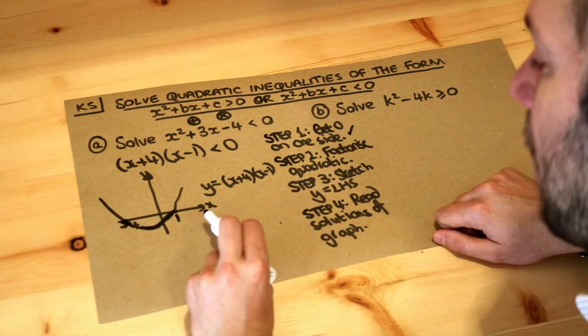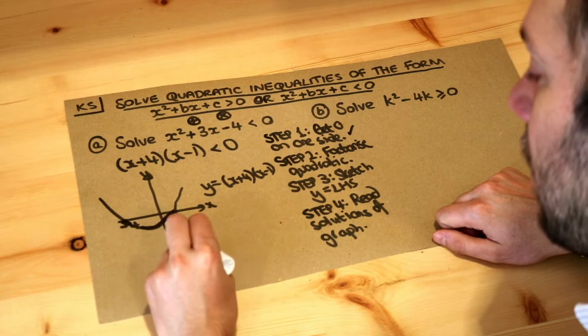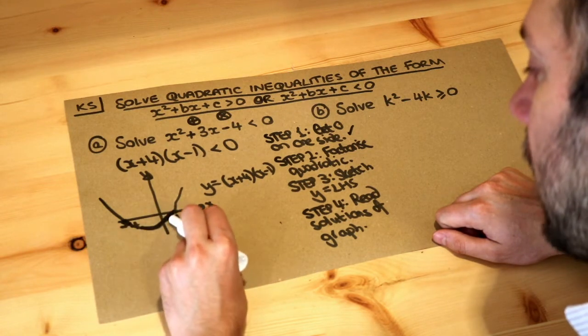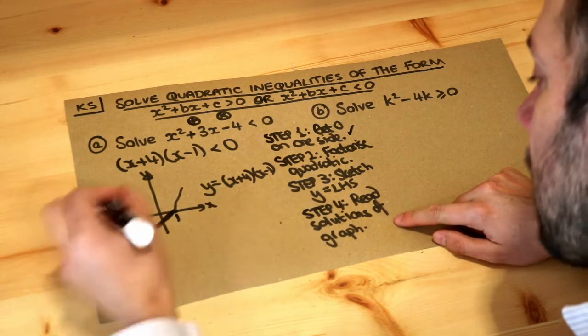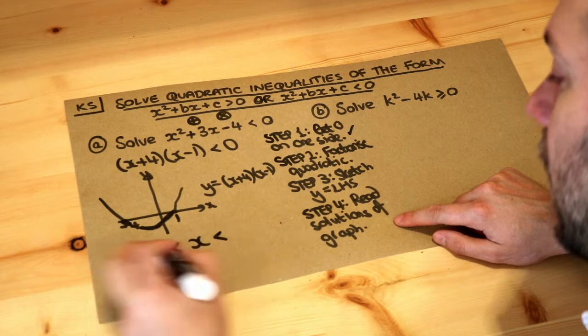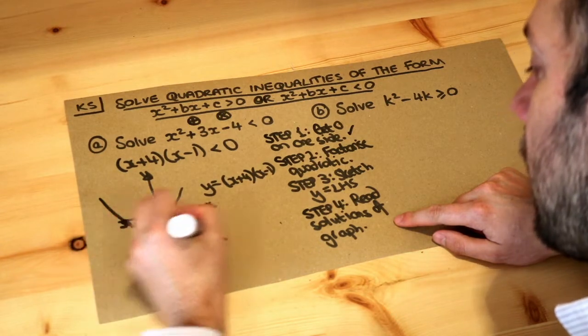That's where the y value is less than zero. And what can we say about the x values in this region? Well we can see the x value is between minus four and one. So that's what we write. We say that the x value is between minus four and one.